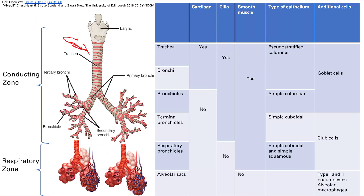Now let's look at the airways of the respiratory system. We start with the trachea, the very large airway, which divides into the left and right bronchi. These bronchi divide repeatedly — secondary, tertiary bronchi — branching out many times. At the very edges you get bronchioles, which get smaller and smaller: terminal bronchioles, then respiratory bronchioles, and finally alveolar sacs where gas exchange occurs. Alveolar sacs are thin-walled and surrounded by blood vessels, allowing gas exchange from the alveoli into the blood.